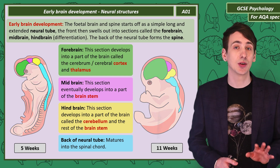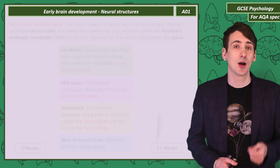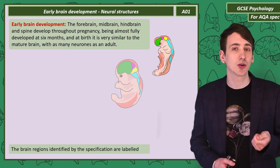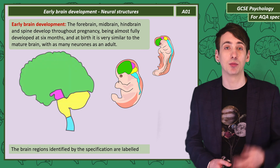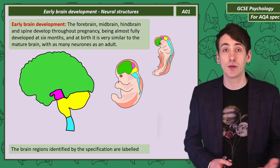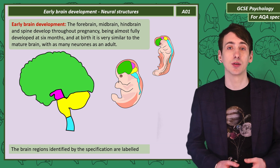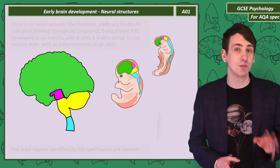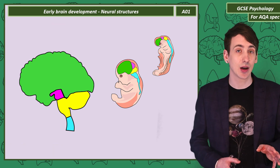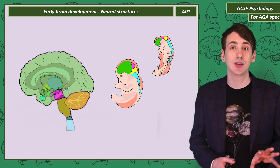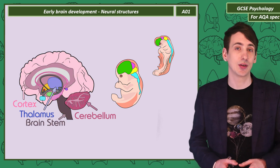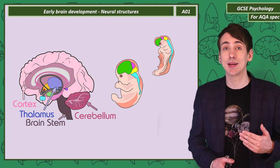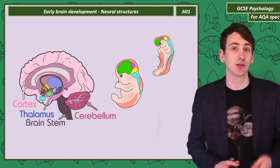At around six months into pregnancy, the brain is very similar structurally to the adult brain, with as many neurons. There are certain brain areas mentioned in the specification, and you can see them all on this diagram. Let's talk in a little more detail about each of these.